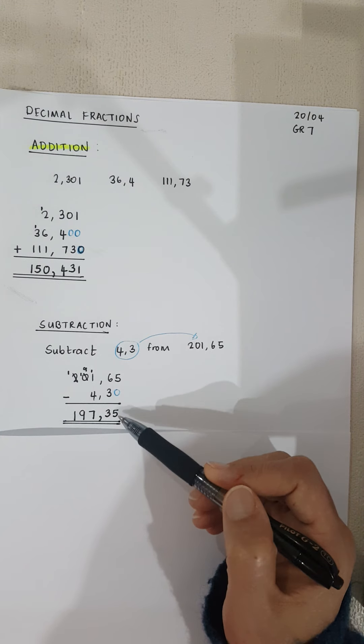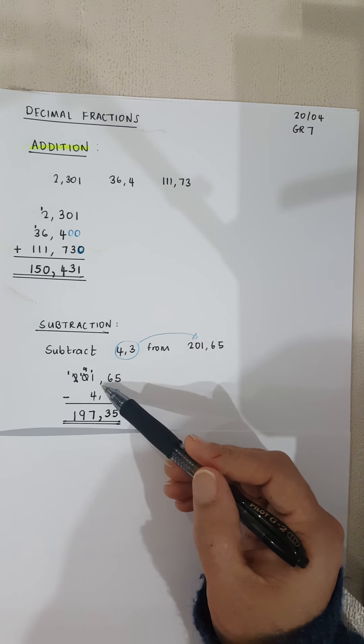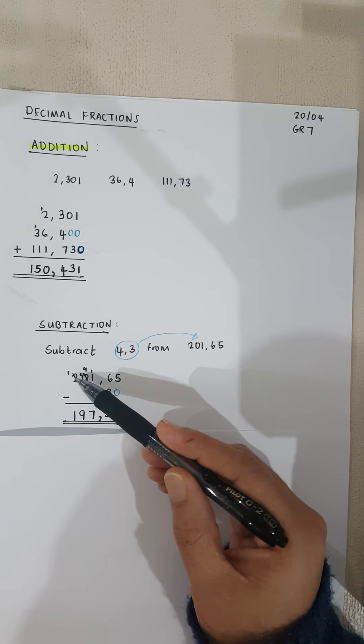Now I start subtracting. So 5 minus 0 is 5. 6 minus 3 is 3. I bring my comma down. I didn't have to borrow so far.